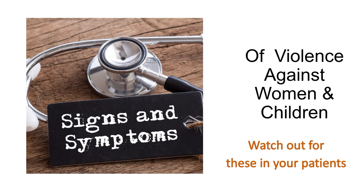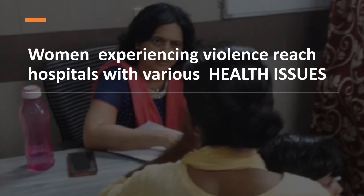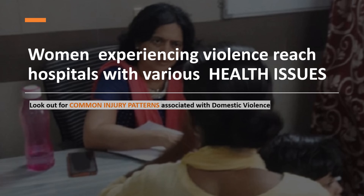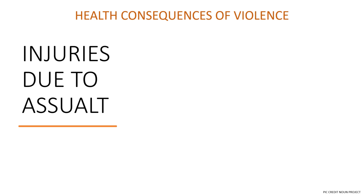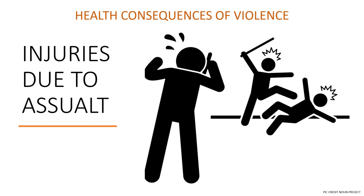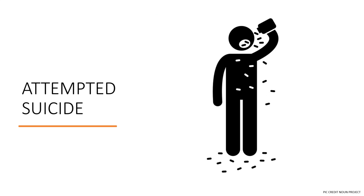There are specific signs and symptoms when a woman facing violence reaches a medical facility. There are common injury patterns associated with domestic violence. The most common forms of health consequences are injuries due to assault, and there are attempts to suicide by consumption of poison.